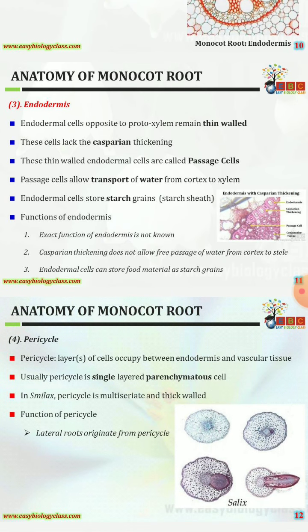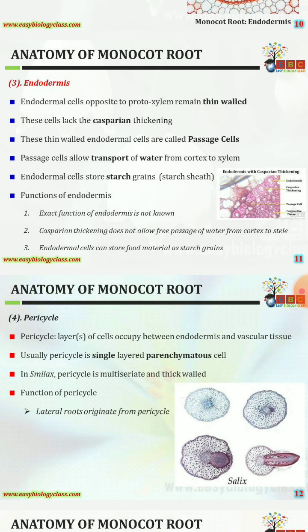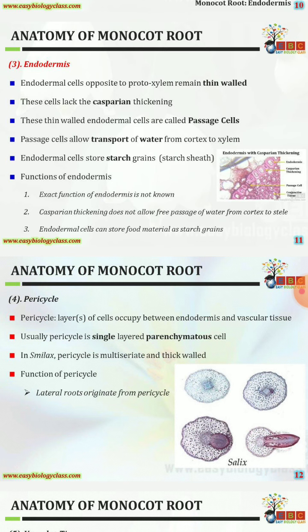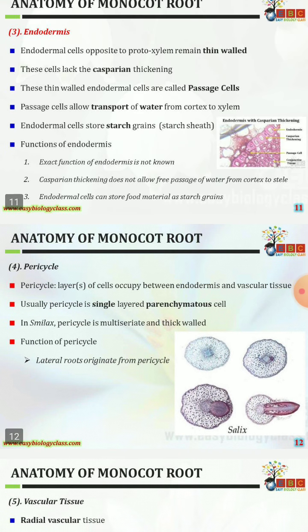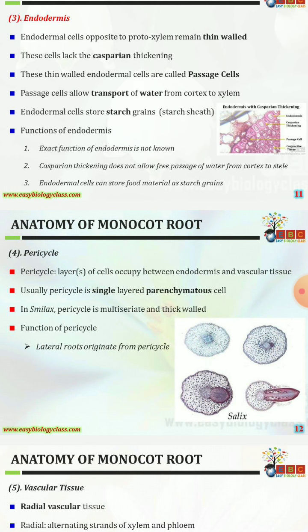Endodermis cells opposite to the protoxylem remain thin-walled and lack casparian thickenings; these are called passage cells. Passage cells allow transport of water from cortex to xylem. Endodermal cells also store starch grains. Functions of the endodermis: casparian thickening does not allow free passage of water from cortex to stele, and endodermal cells can store food materials as starch grains.